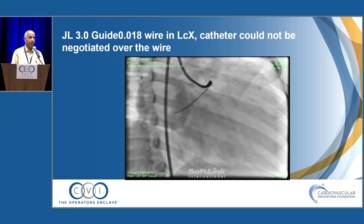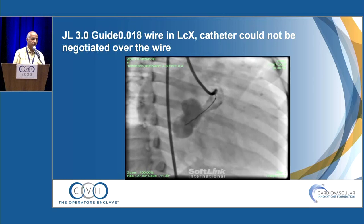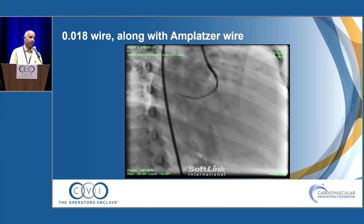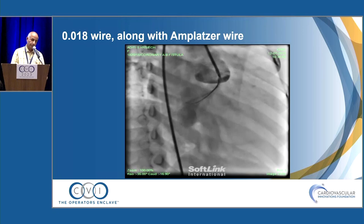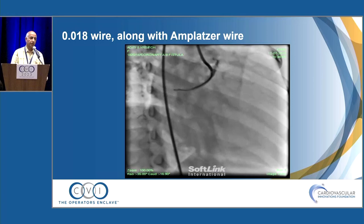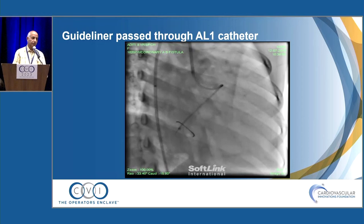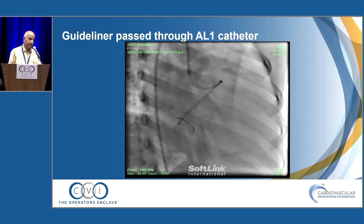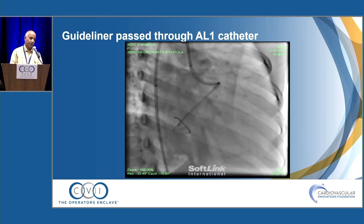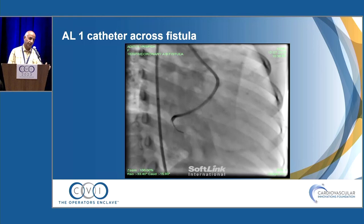The obtuse angle of the circumflex gave us a tough time. Initially we took an 0.018 guidewire, but could not negotiate any catheter over it. We tried an Amplatz wire — could not negotiate either. We tried both wires together, but the catheter still could not be negotiated. So we took a Guideliner, negotiated it through the left circumflex artery, and over this Guideliner pushed our AL-1 catheter, which went inside the fistula.